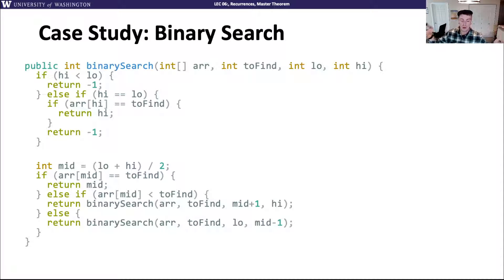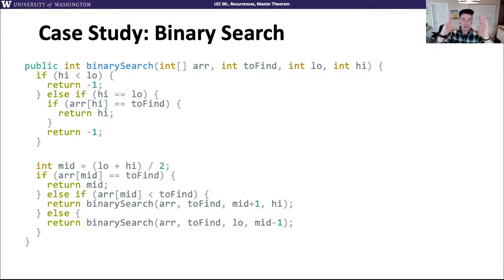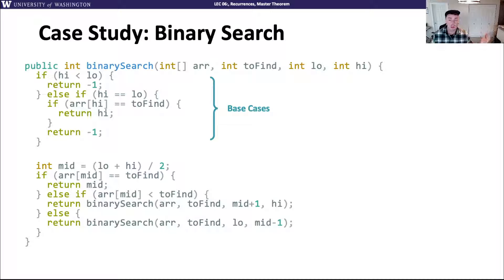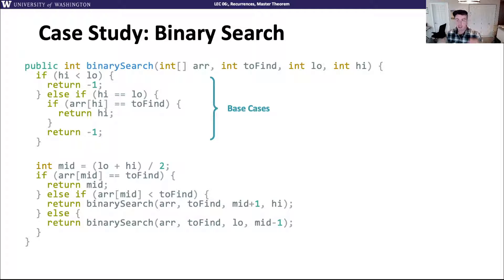You have a sorted array — called R in this code — and you're looking for a value to find. The idea of binary search is you have a low index and a high index, and these two indices tell you where you're searching at every point in time. Most recursive code starts with a base case: how do you know when you're done? In binary search, you know you're done when low and high — the range of the array you're looking at — are right next to each other, meaning there's only one thing left.